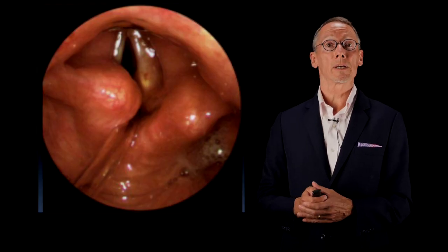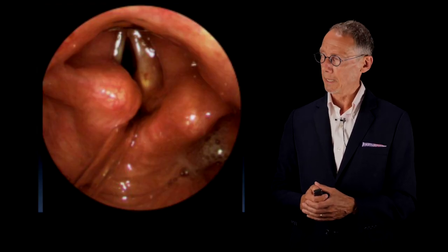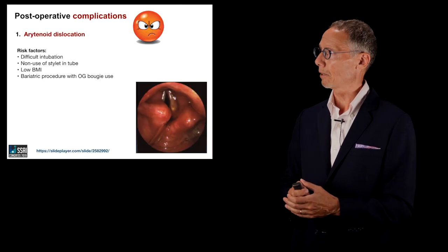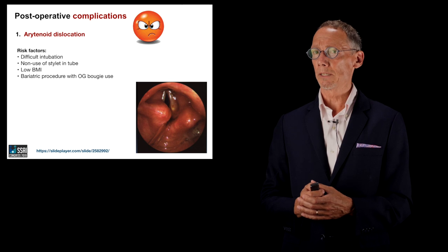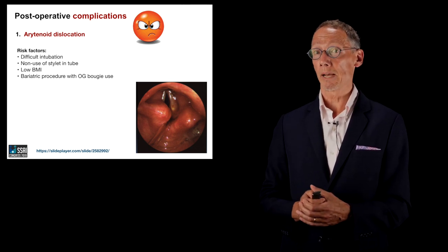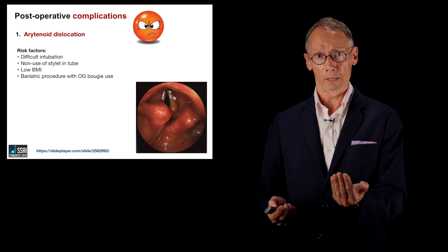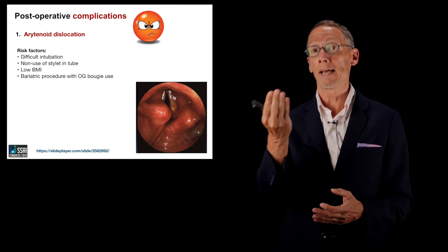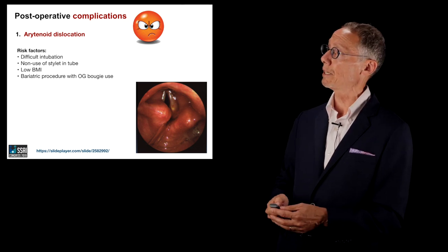Moving on to more serious complications of tracheal intubation — one of which is arytenoid dislocation, a fairly significant but infrequent complication. Risk factors include difficult intubation, and not using a stylet in the tube, as multiple attempts at the larynx may be required to place the tube correctly.